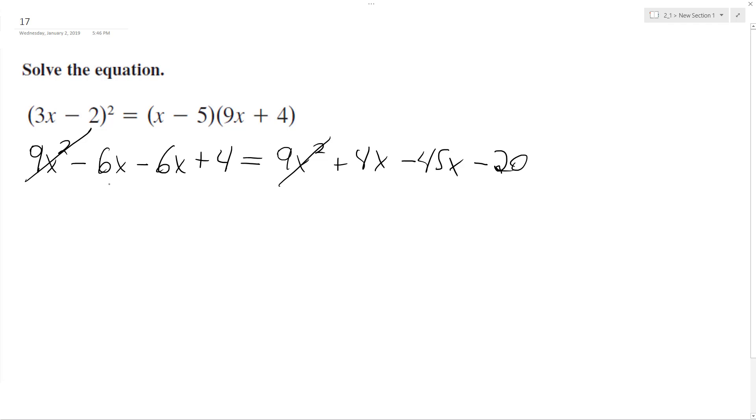Combining x terms, I get negative 12x. I'm gonna condense these a little bit more. 4x minus 45x is negative 41x, and I have minus 20.